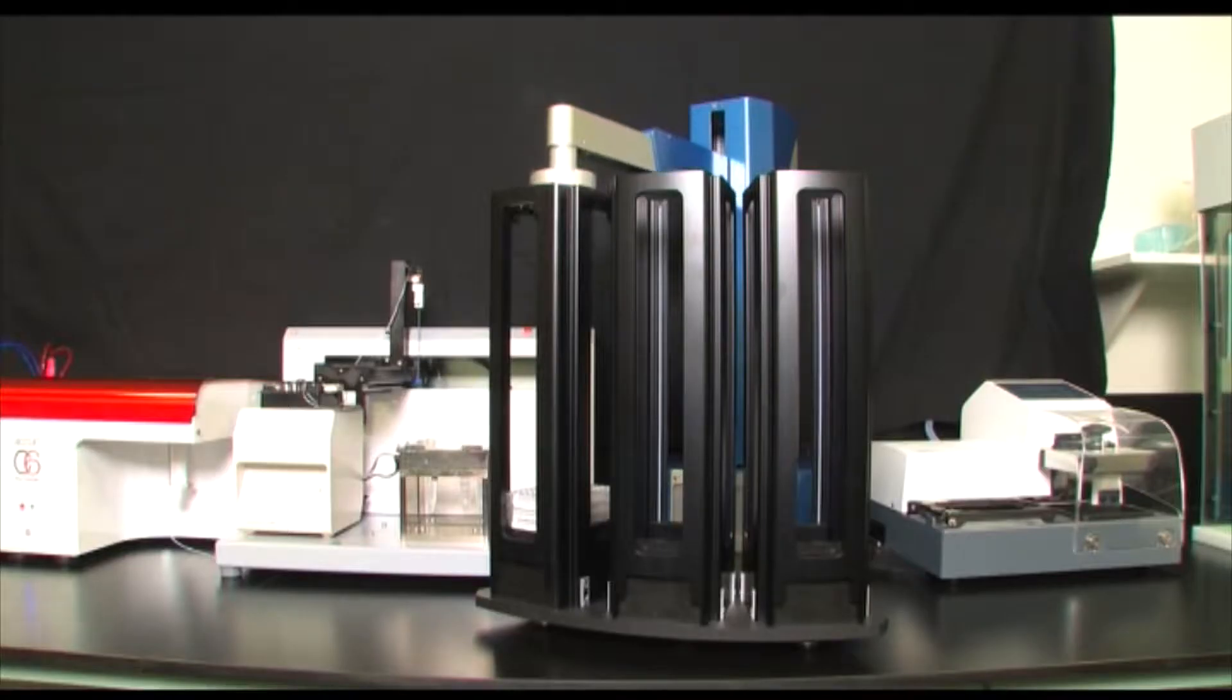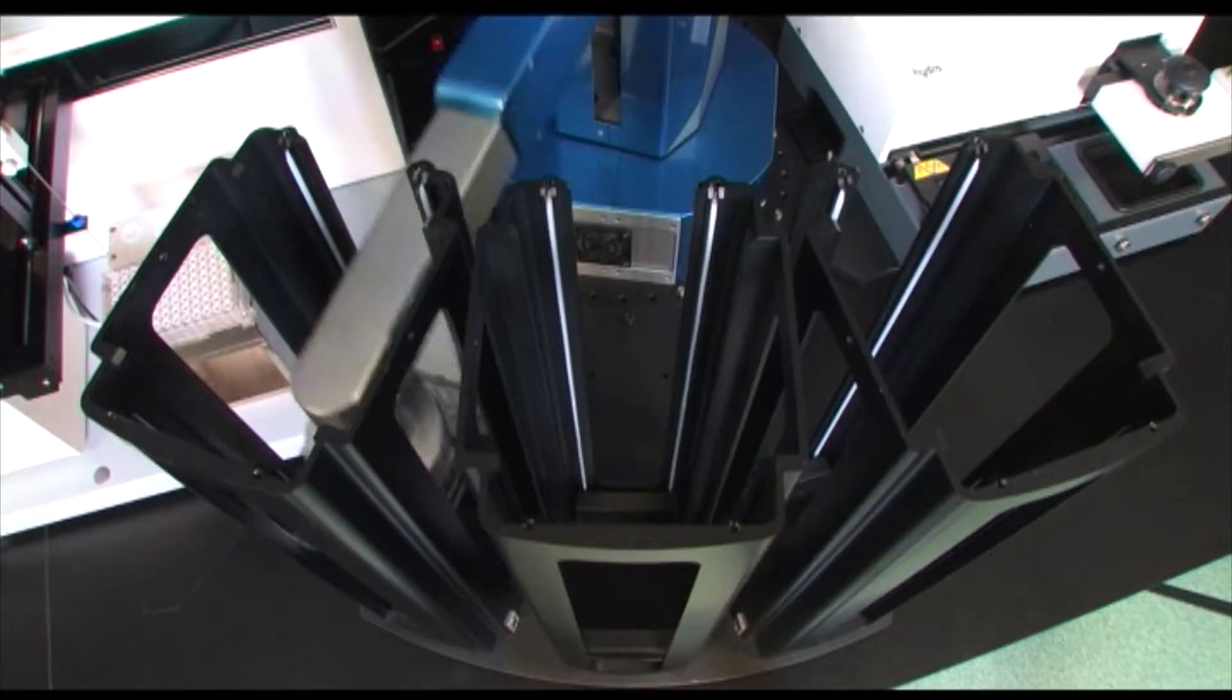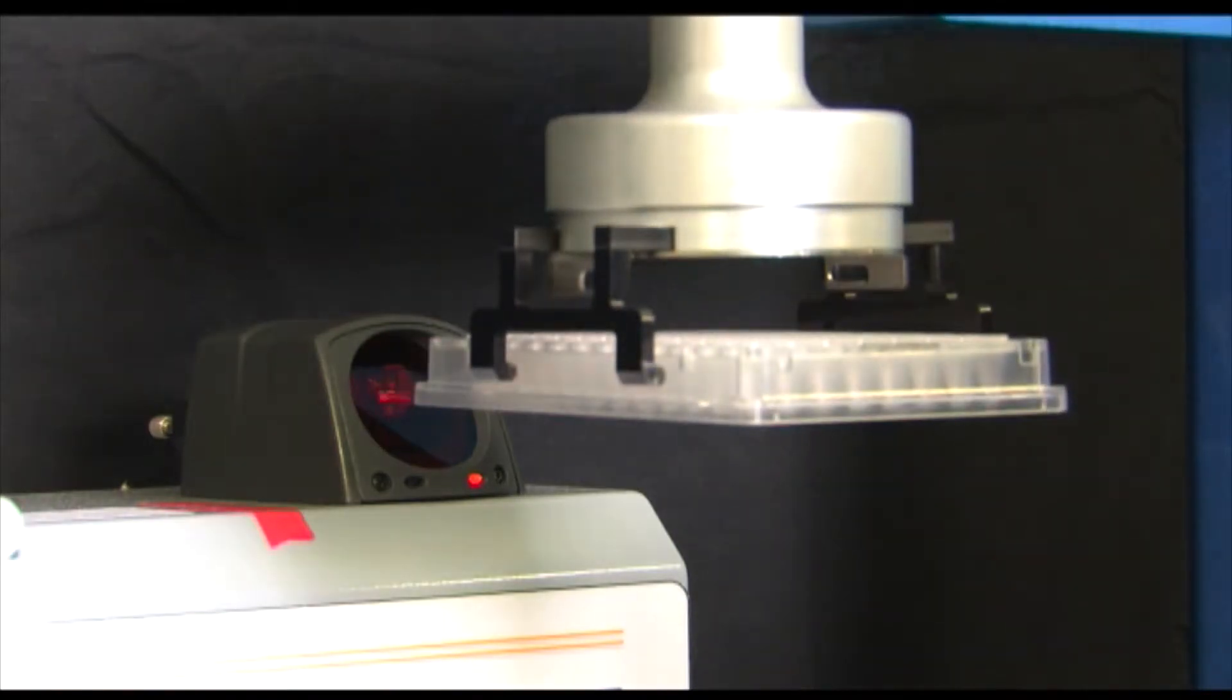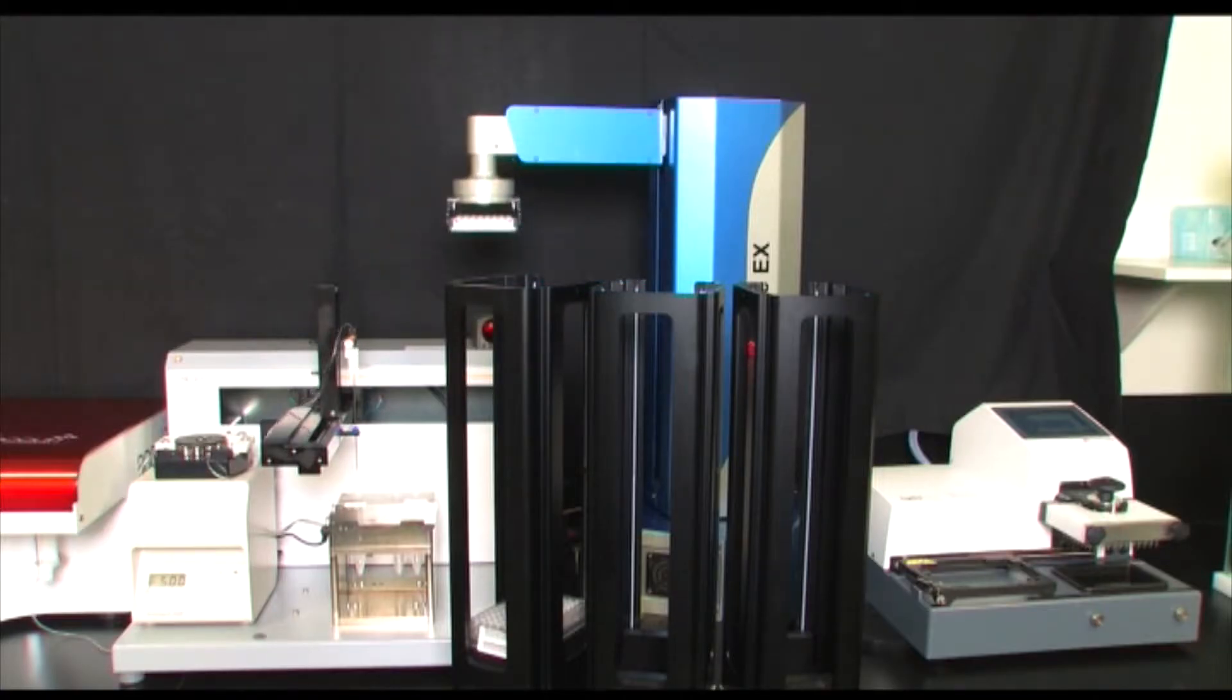The robotic arm of the Sirocco, developed by Hudson Robotics of Springfield, New Jersey, starts by grabbing the first plate from stack one, reading the barcode, and then transporting to the washer.